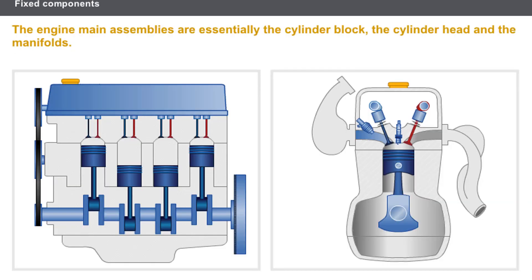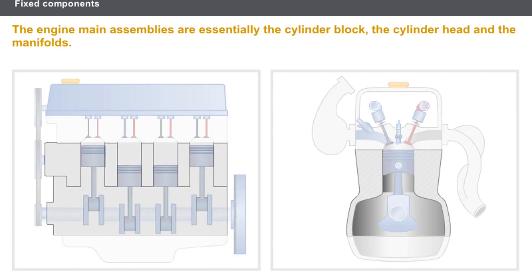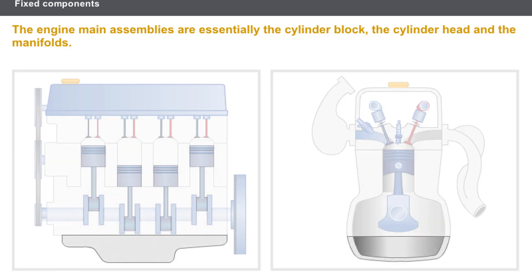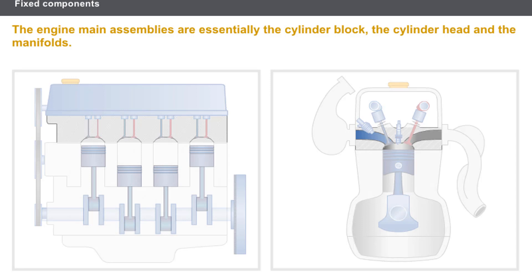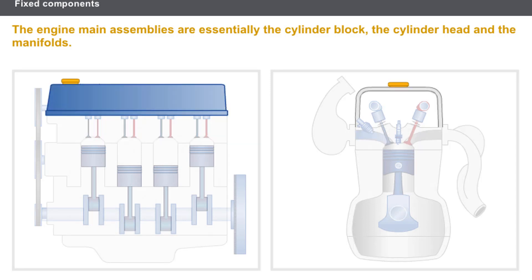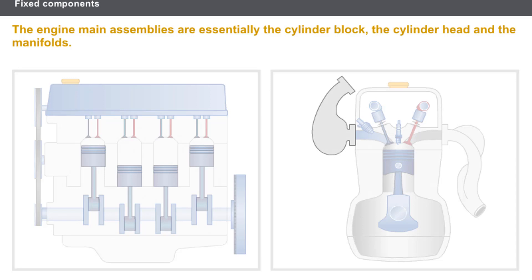Now let's take a look at the main engine assemblies. The engine consists mainly of the following fixed assemblies: the cylinder block, the oil sump, the cylinder head, the rocker cover, the exhaust manifold, and the inlet manifold.